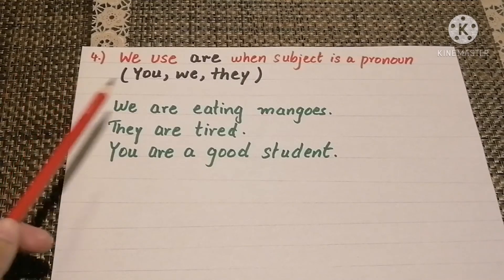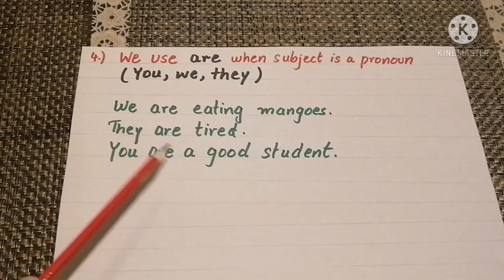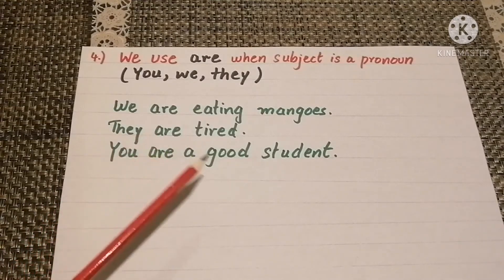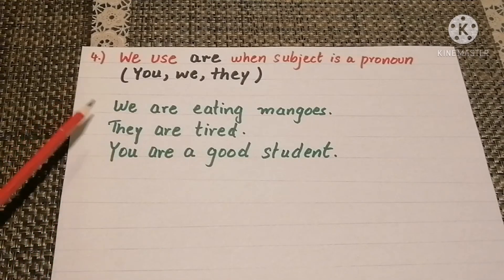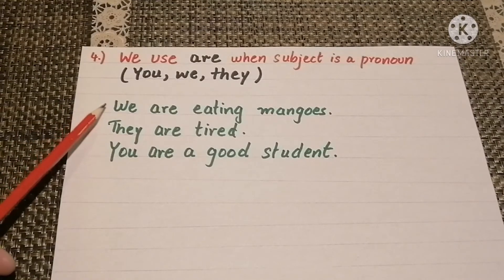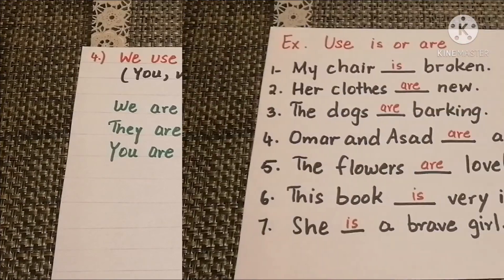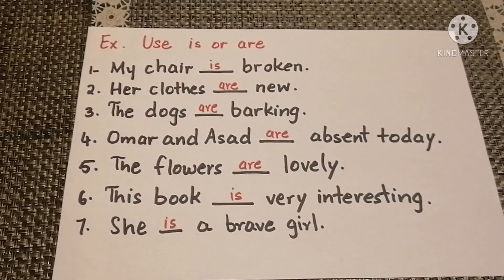We also use 'are' when the subject is a pronoun — you, we, or they. For example: we are eating mangoes, they are tired, you are a good student. Here the subjects are the pronouns we, they, and you, therefore we are using 'are.'